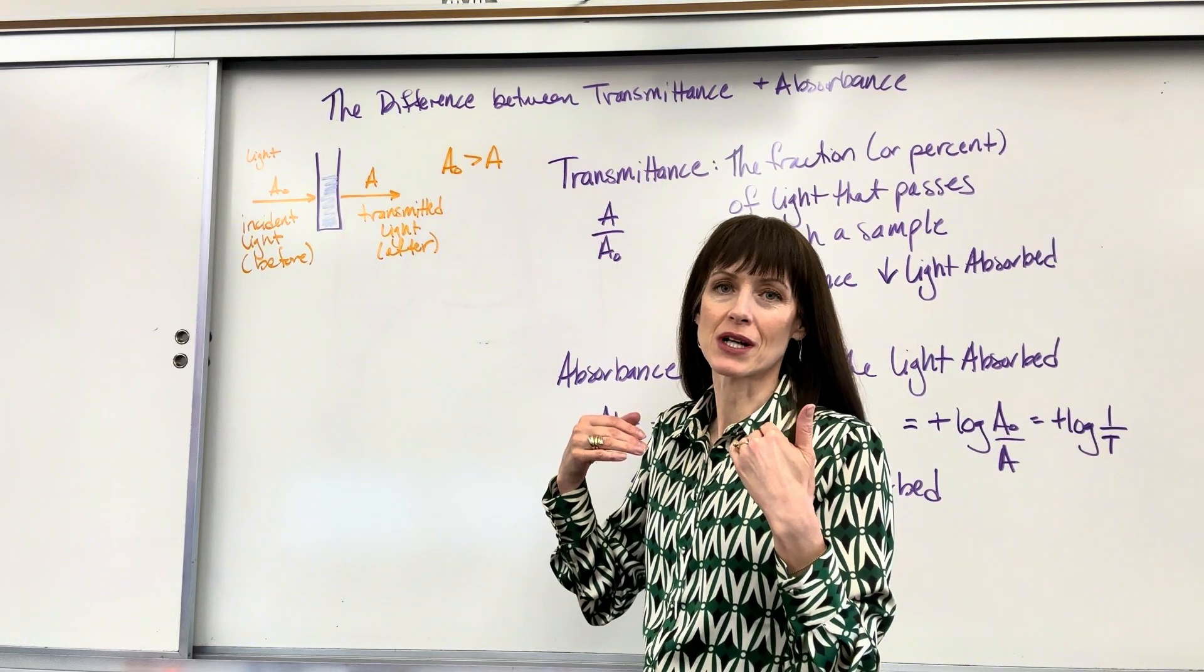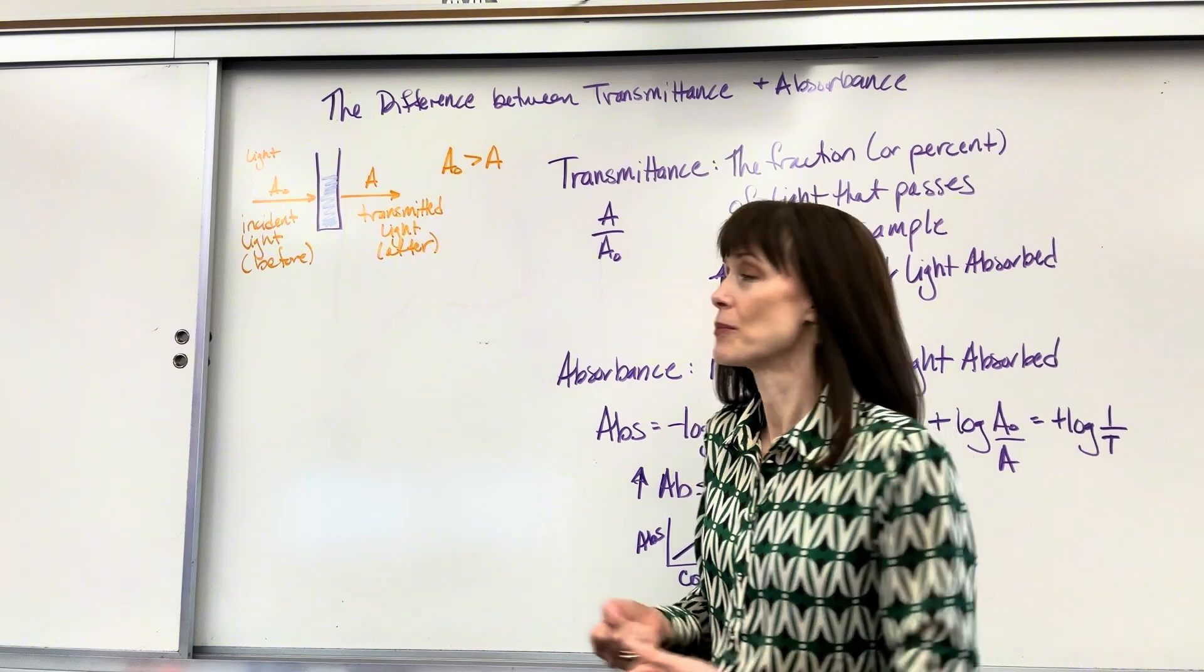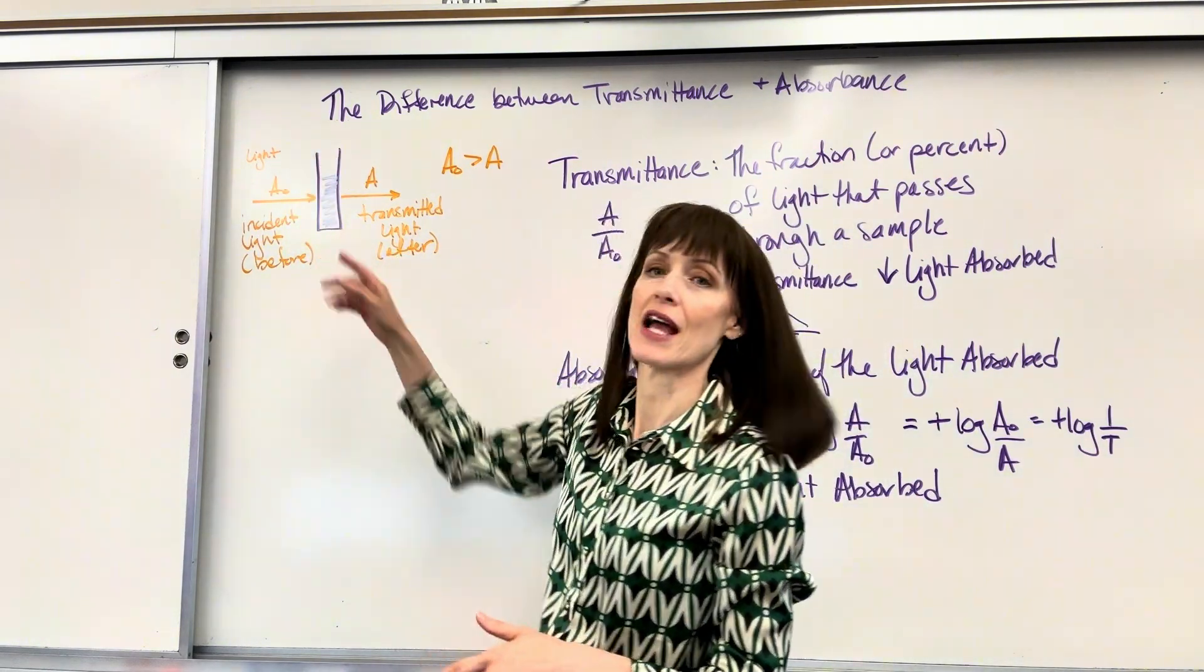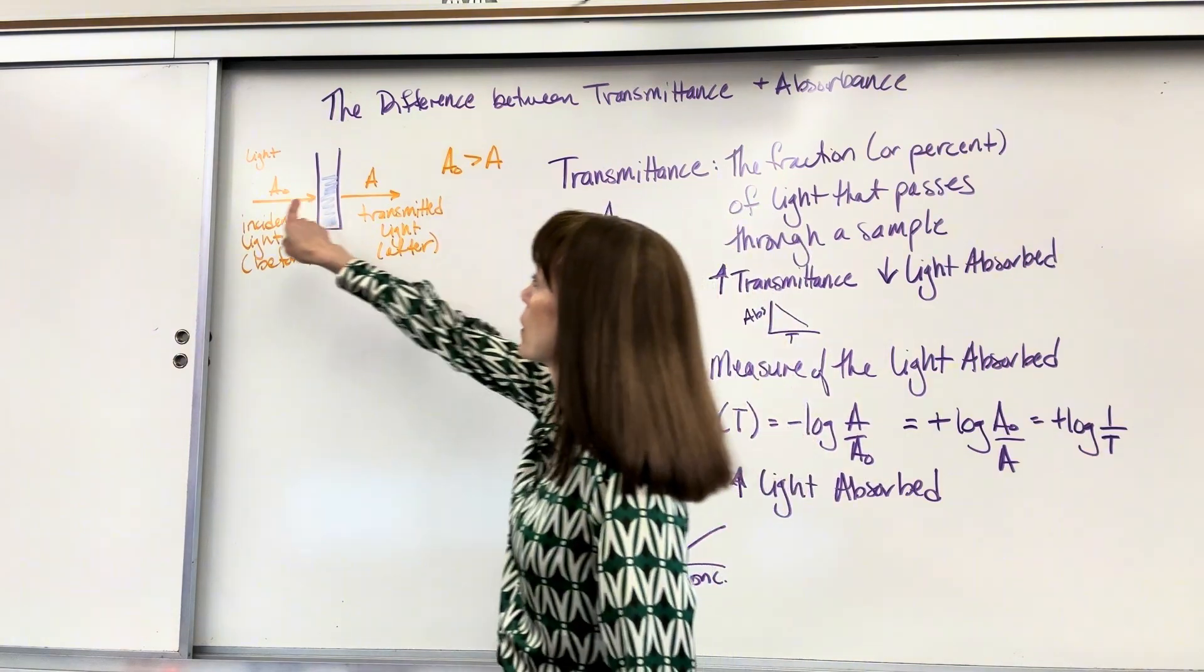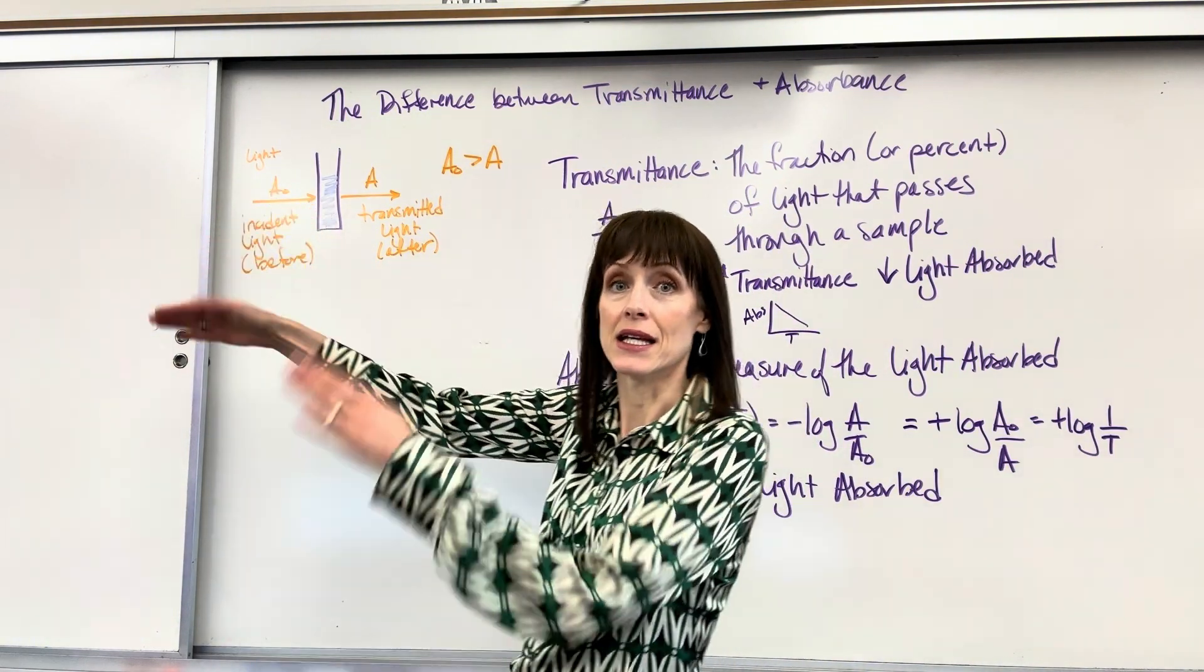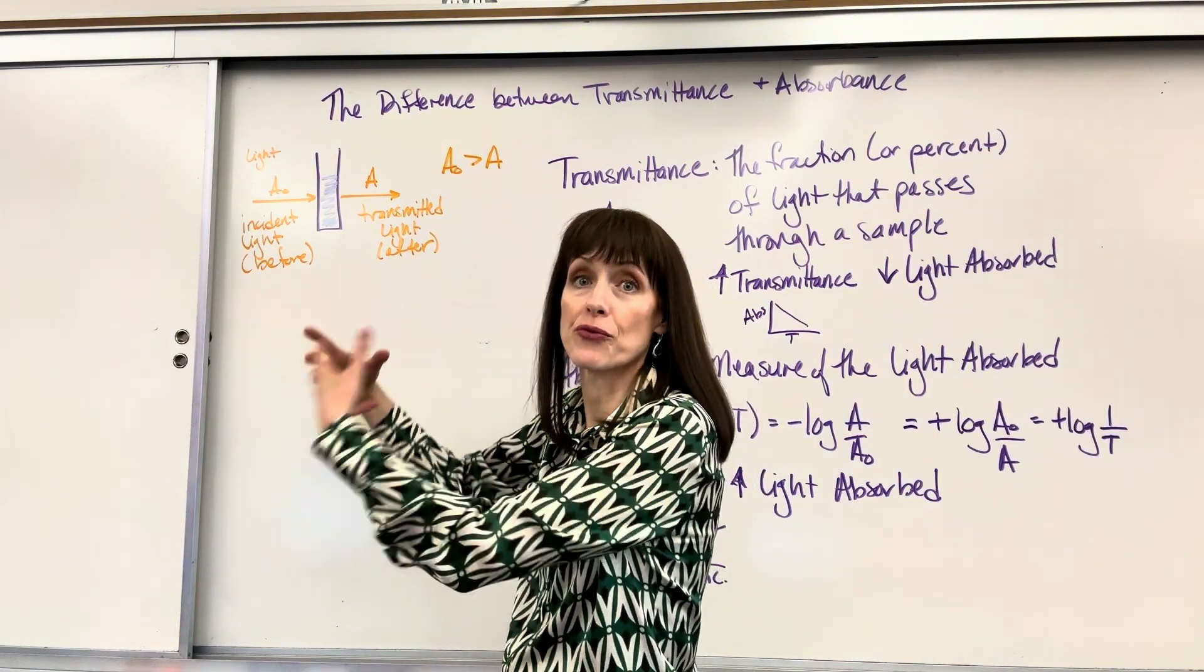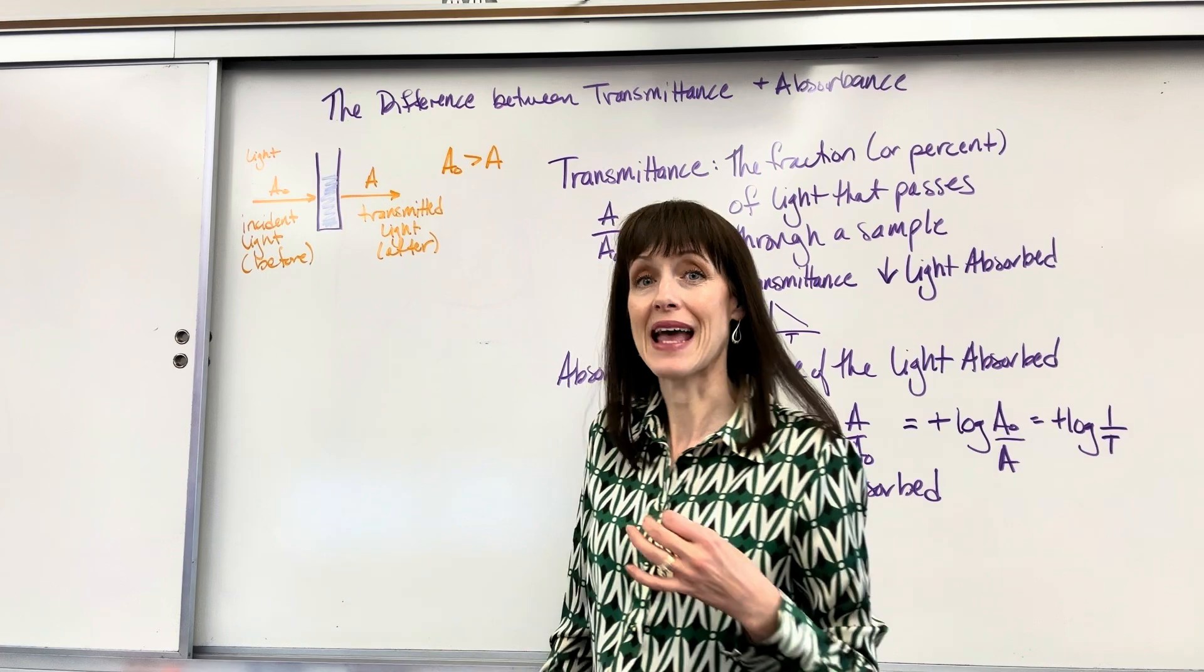Now remember when we're talking about transmittance and absorbance, it's light being absorbed by a sample. Here's my little diagram for you. Let's pretend that this is our cuvette and I have a blue solution, maybe a beautiful copper sulfate. We're going to put light in. It's going to go through that sample. That's called the incident light. So the light before it hits the sample, and I'm going to represent that with A-knot.